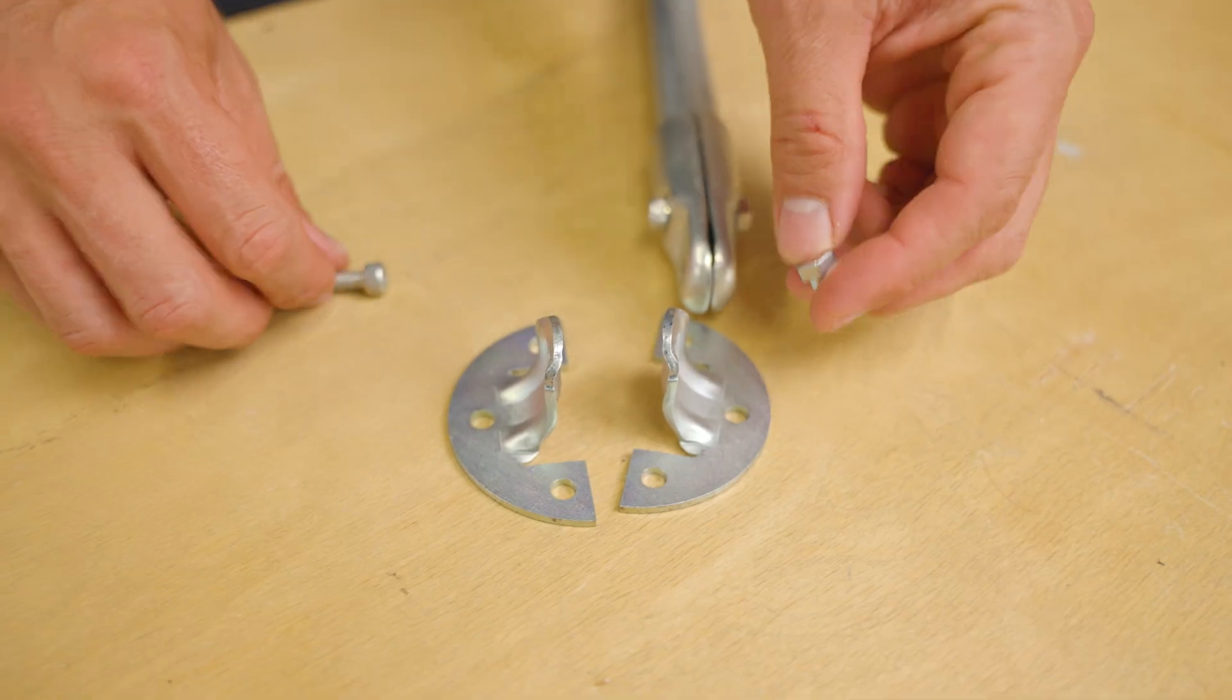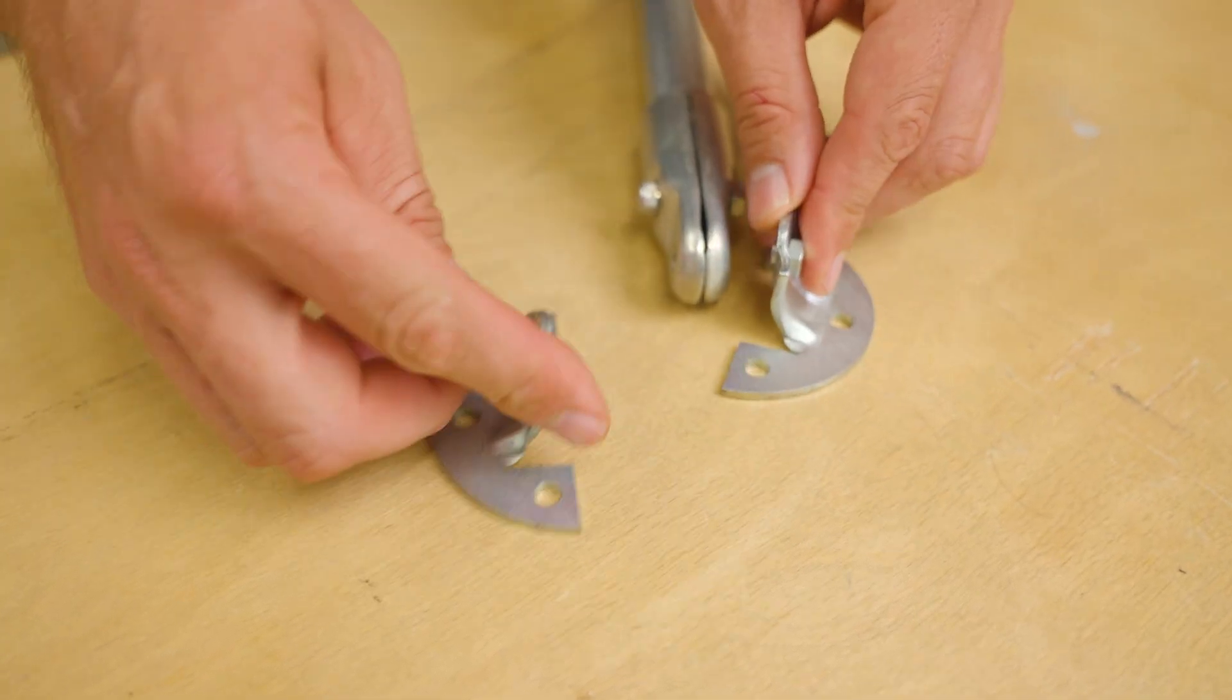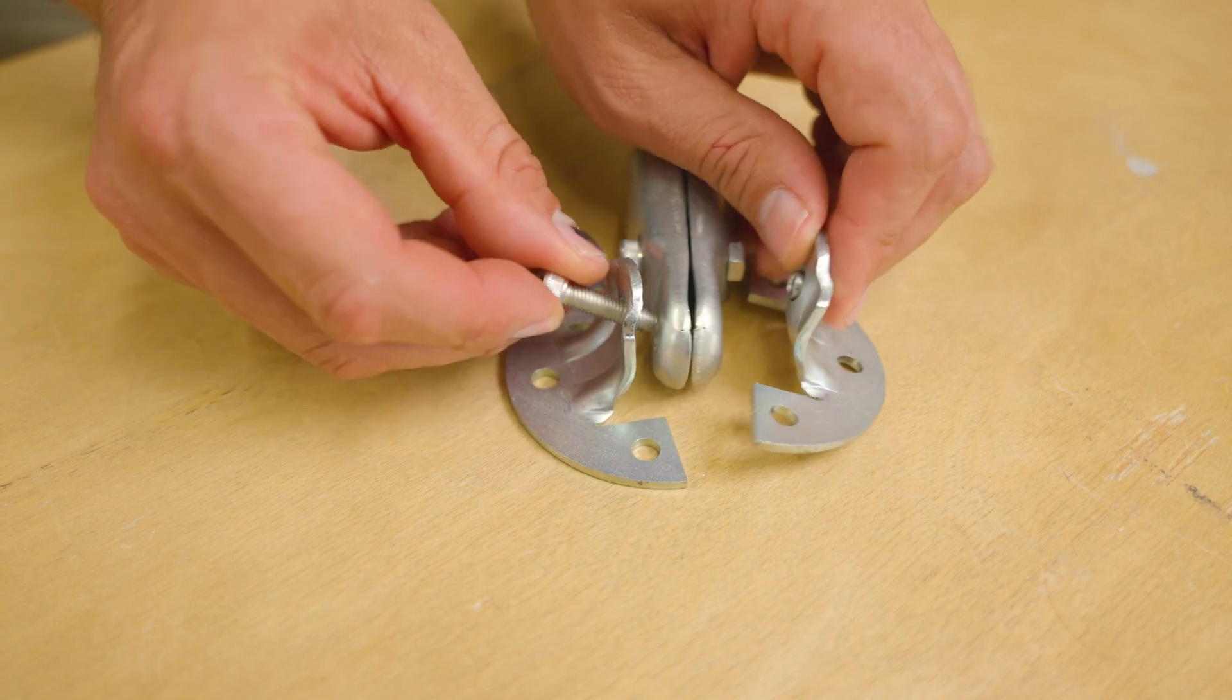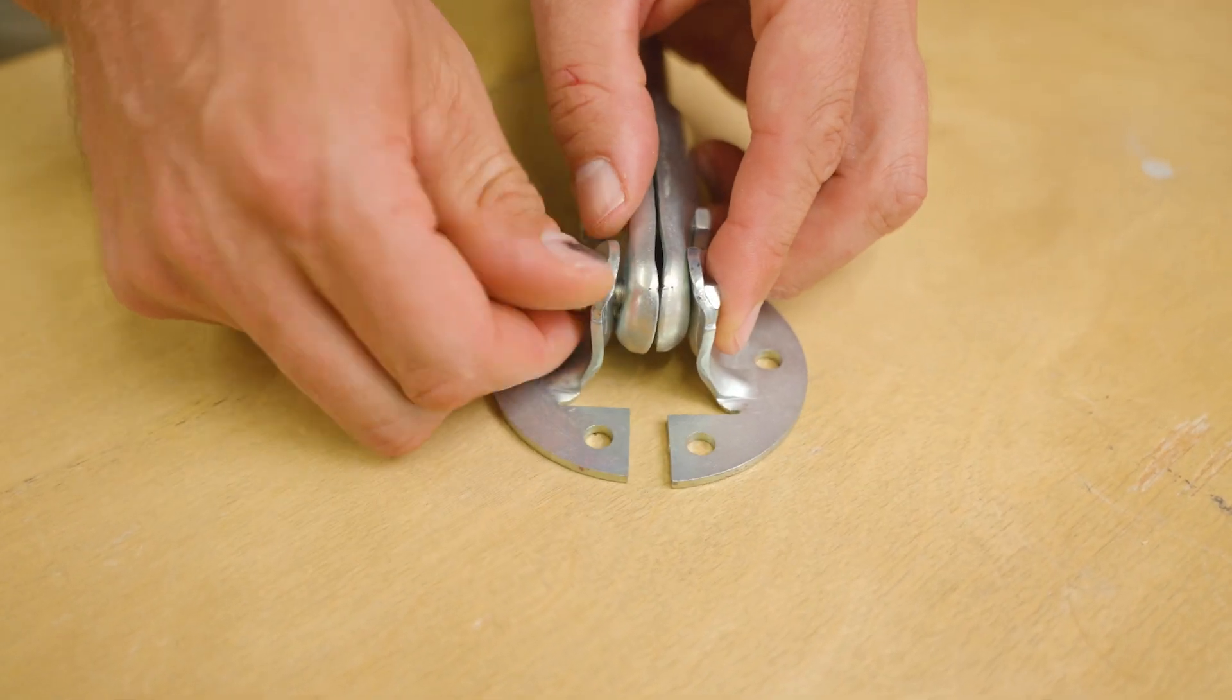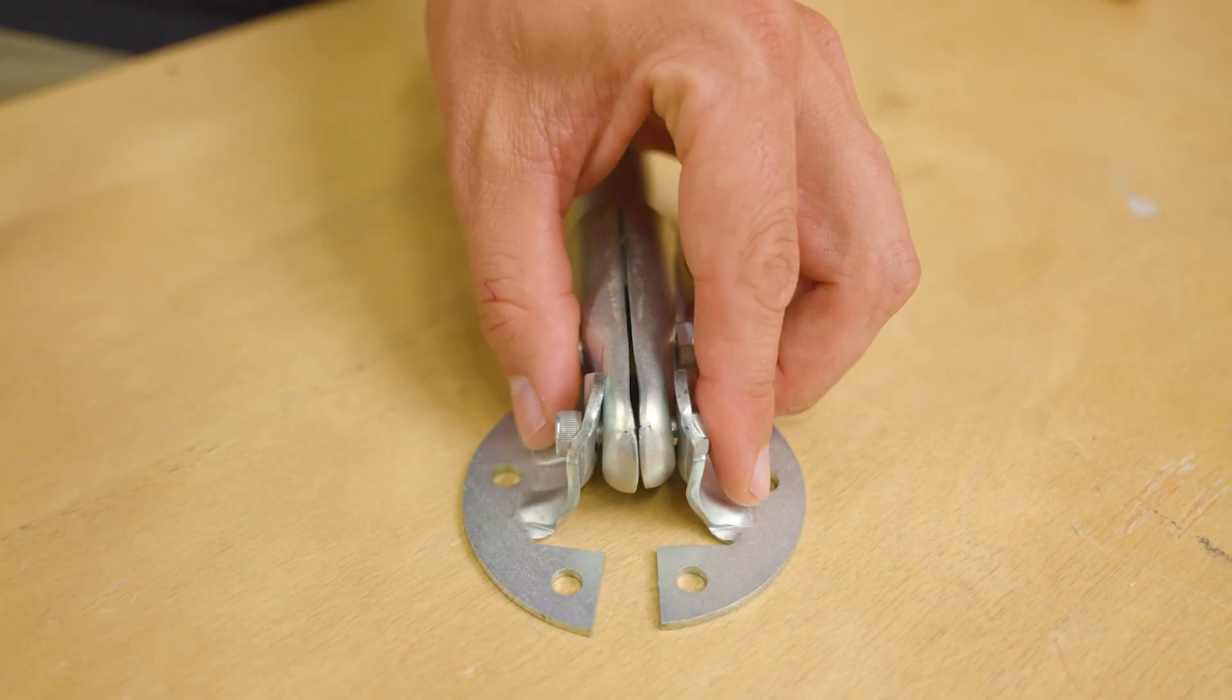Next, you will secure the base pieces to the end clamp. Once again, both pieces are the same so the orientation does not matter. The base pieces will go on the outside of the end clamp pieces. Align the holes in all four pieces and thread a bolt into a nut that you are holding on the other side.